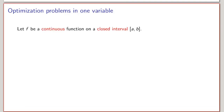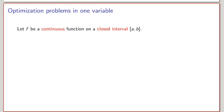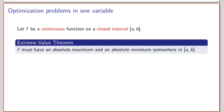We can use a very important result called the extreme value theorem. Let f be a continuous function defined on a closed interval [a, b]. The extreme value theorem states that f must have an absolute maximum and minimum somewhere over the interval, either at a local min and max — which must be at a critical number — or at the end points of the interval.